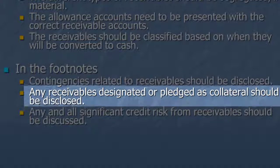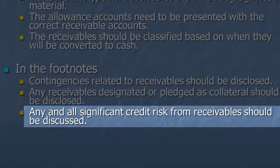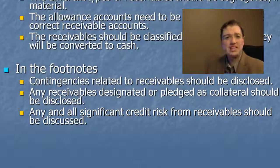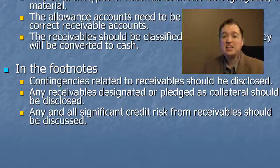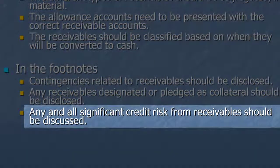We also need to disclose if we have designated or pledged our accounts receivable as collateral on a loan, so that investors know that receivable will go to pay off that debt and not provide free cash for other uses. The last disclosure is if we think we have significant credit risk. Usually the allowance for bad debt takes care of this, but occasionally a company grants credit without a significant credit check, creating risk beyond their estimated bad debt expense. This happens most often when you open up your credit policy to lower credit ratings than previously accepted.